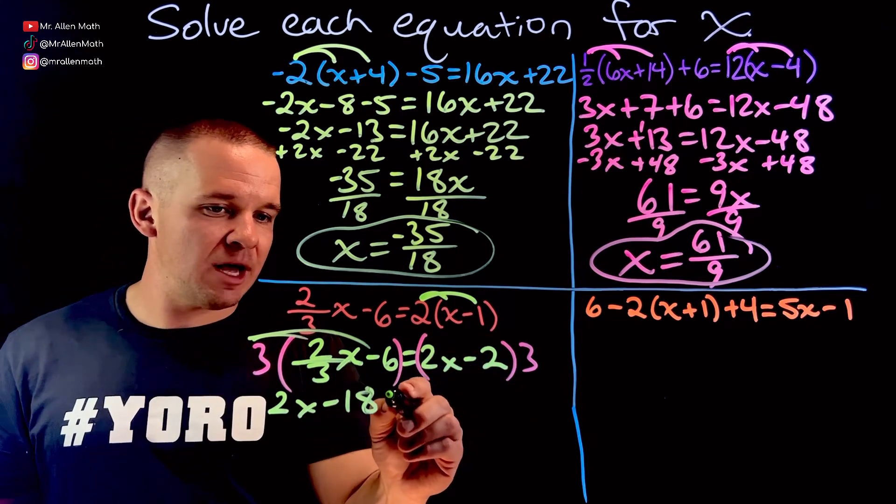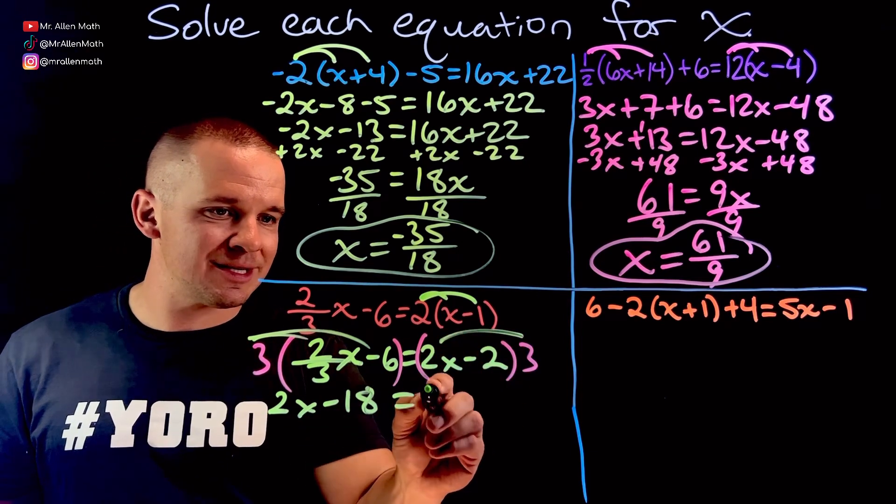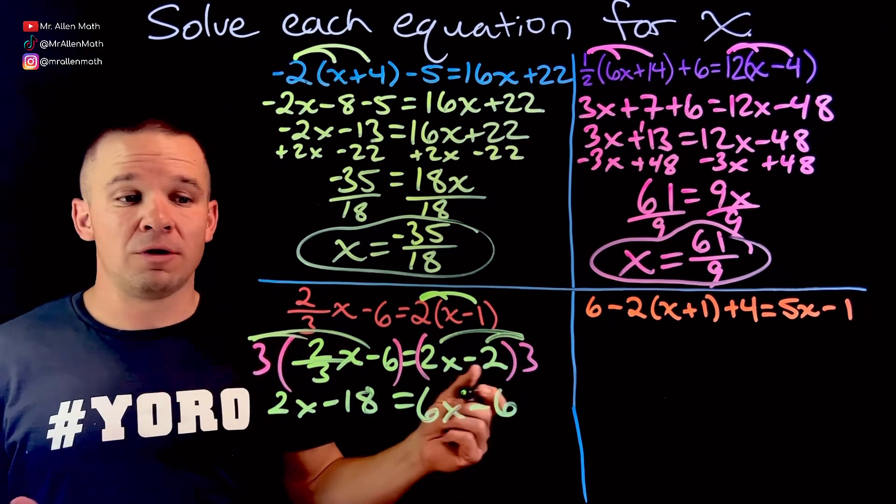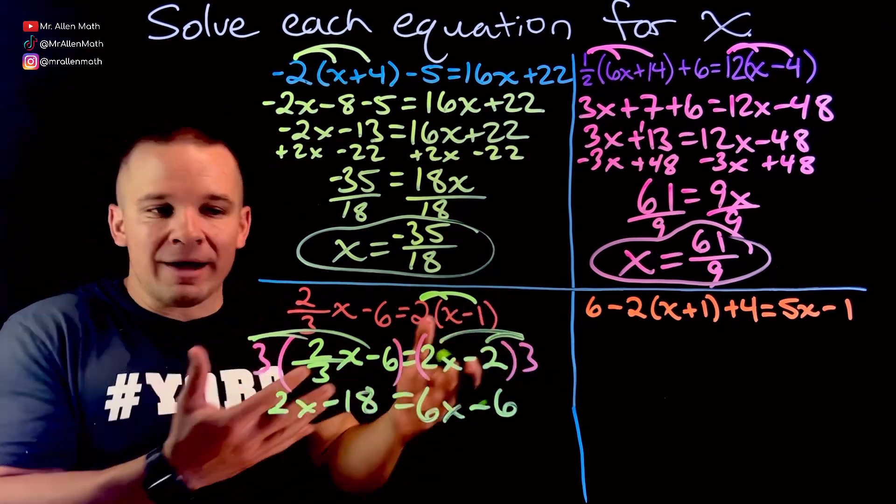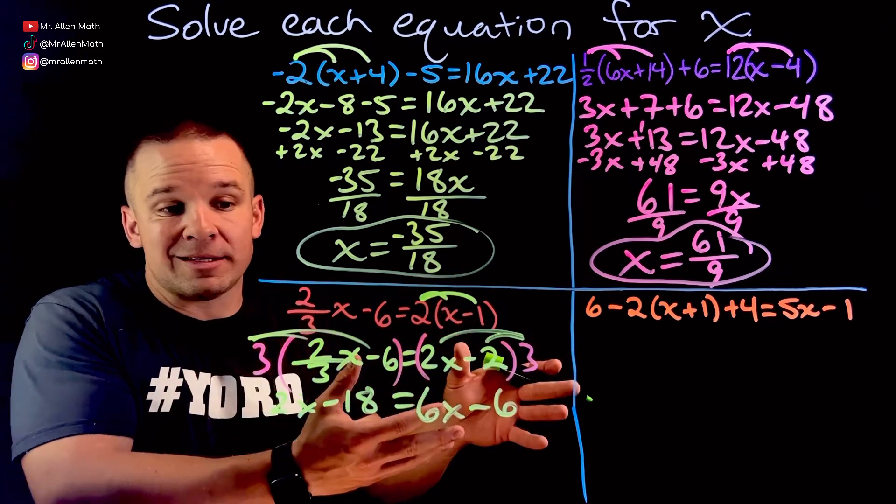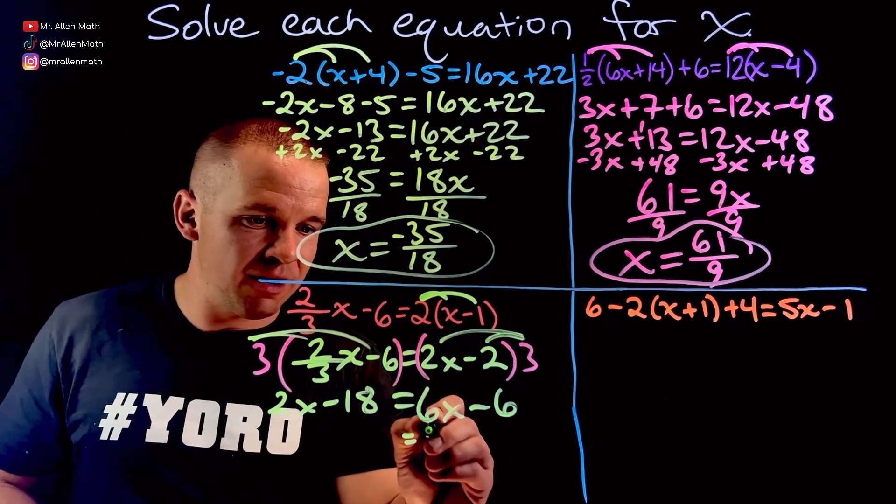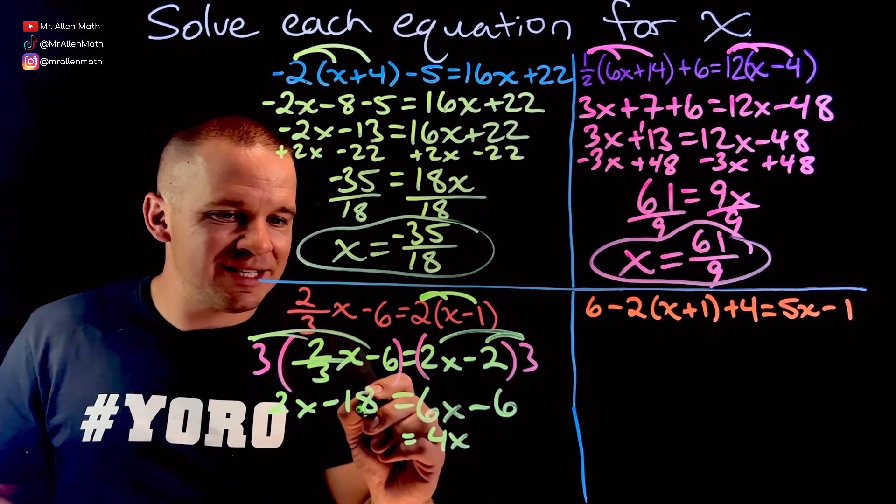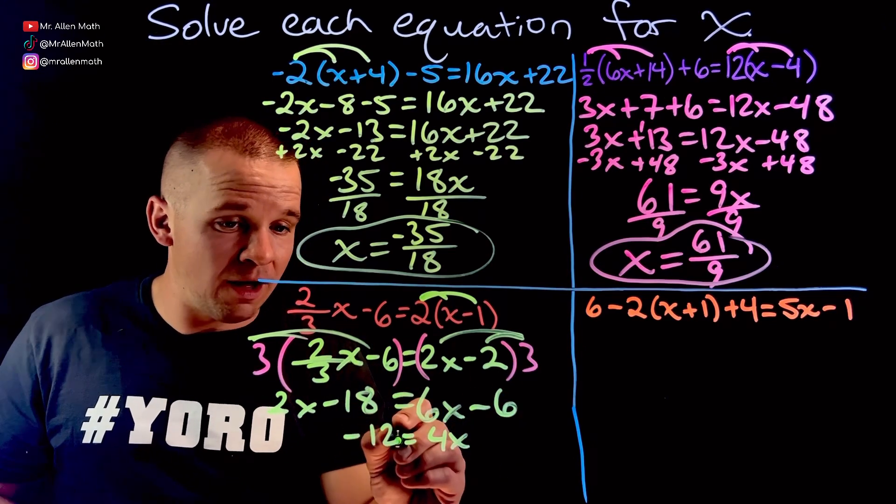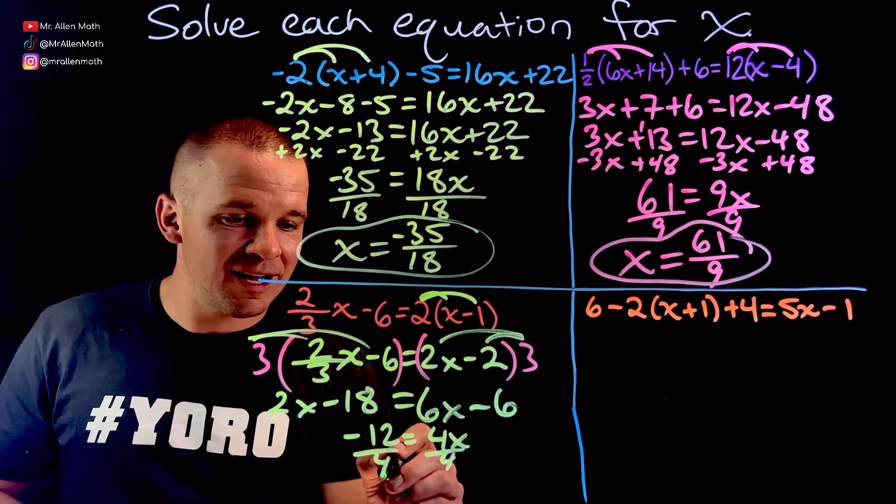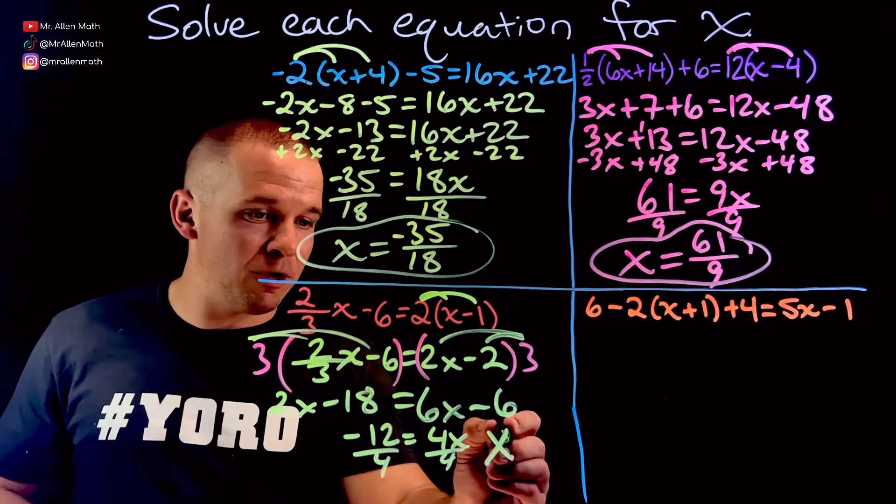And then over here, I'm going to have equals, well, three times two is six x, three times two is then negative six. My fractions are gone. Now I can get everything on one side or sorry, my x is to one side and numbers to the other. So subtract two x and I get four x, add six, I get negative 12. This one's actually going to work out nice. Divide by four and I get x equals negative three.